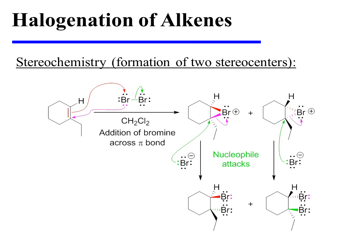In this next example, two stereocenters will be formed during the halogenation. The reaction begins similarly with the attack of the alkene pi bond on one of the two bromine atoms, thereby displacing the other as bromide. The bromine being added to the substrate simultaneously attacks the alkene carbon that would otherwise have lost a bond, resulting in the formation of the cyclic bromonium ion.